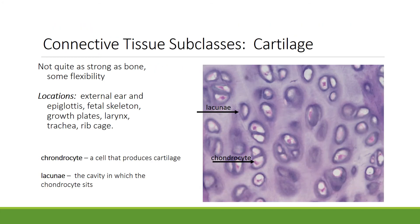Cartilage is also a type of connective tissue. It's located in the external ear, the epiglottis, the fetal skeleton, growth plates, the larynx, trachea, and ribcage. It is not quite as strong as bone, and it's much more flexible than bone.